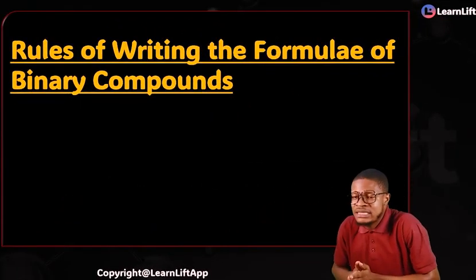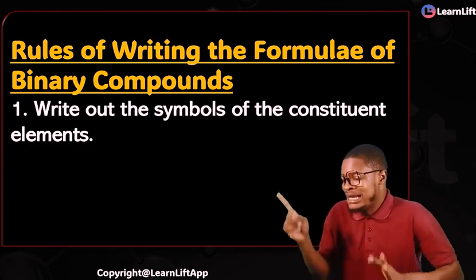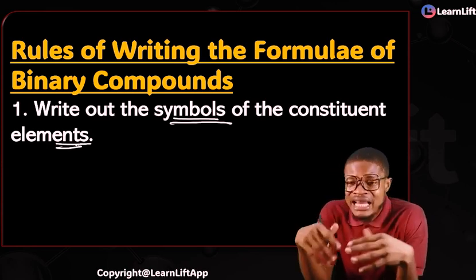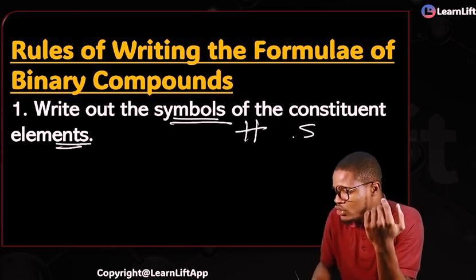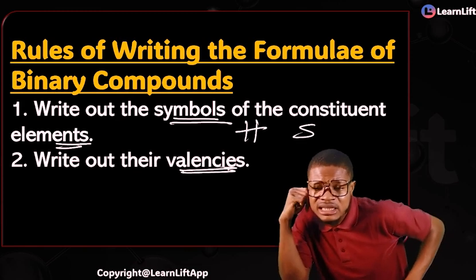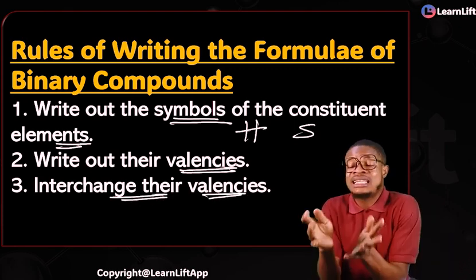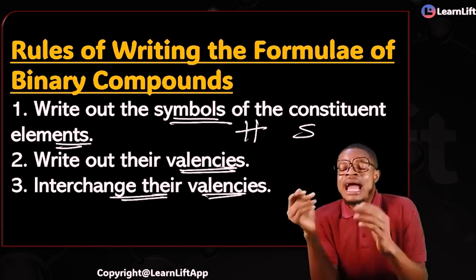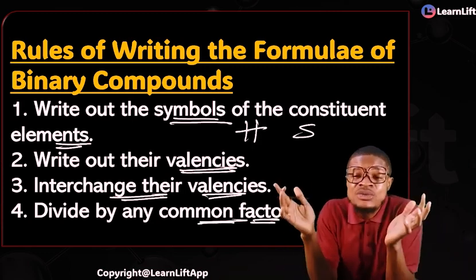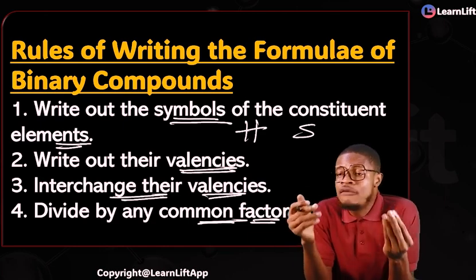What are the rules for writing the formula of binary compounds? There are four simple rules. Rule one: write out the symbols of the constituent elements. Rule two: write out their valences. Rule three: interchange their valences. Rule four: divide by any common factor. If there is a common factor, divide by it, and what you have represents the formula of the binary compound.